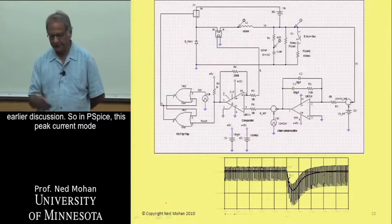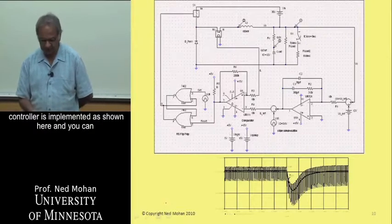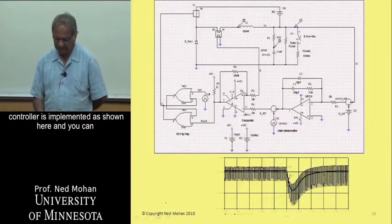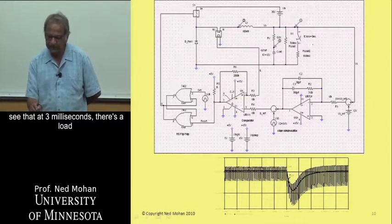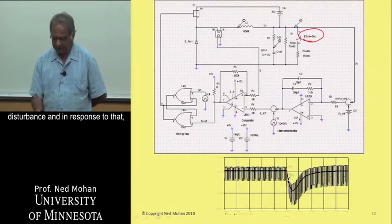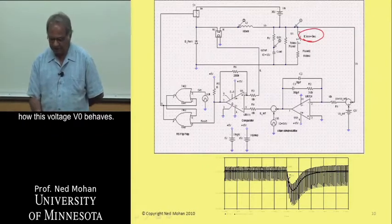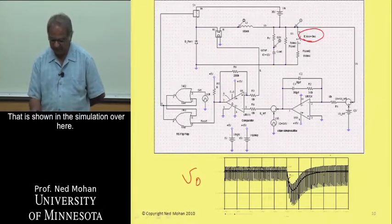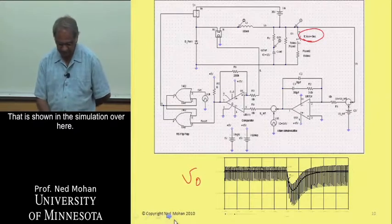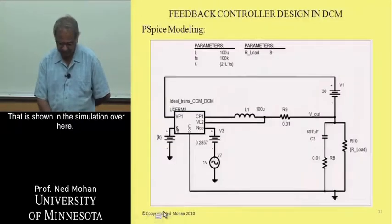In PSPICE, this peak current mode controller is implemented as shown. At three milliseconds there is a load disturbance, and in response, we can observe how the output voltage V0 behaves, as shown in the simulation.